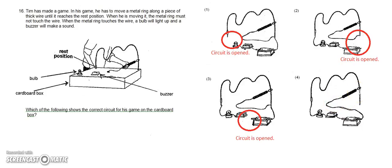And so when it touches the wire, it will be a closed circuit and it will trigger off the lighting up of the bulb and the sounding of the buzzer. And therefore, our answer is option 4.